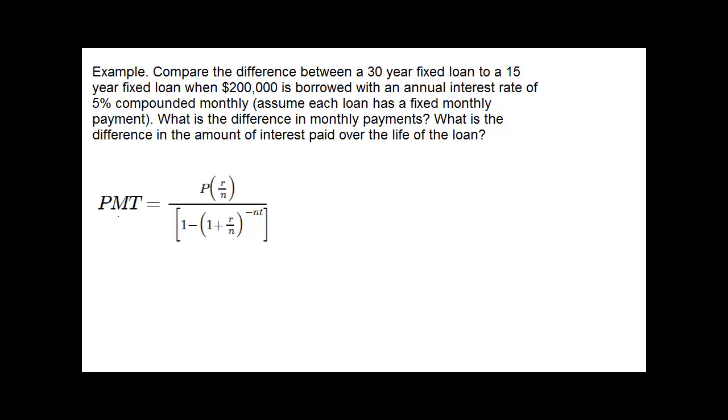Below we have the fixed payment formula, so PMT here represents the fixed payment that you're going to be making for the next 30 or 15 years.